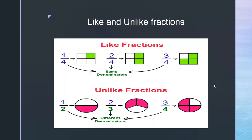The next and last topic is like fractions and unlike fractions. Like fractions are when the denominators are the same — for example, one upon four, two upon four, three upon four all have the same denominator, so they are like fractions. If the denominators are different, like one upon two, two upon three, three upon four, then they are unlike fractions. In the next video, we will understand the addition and subtraction of fractions. Bye-bye, have a nice day!